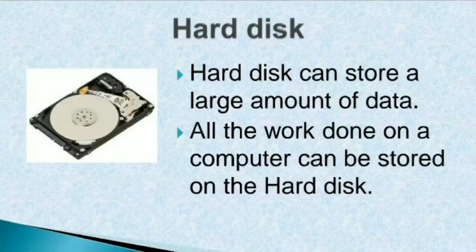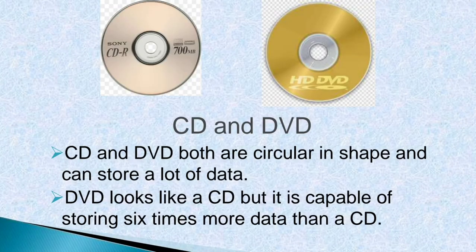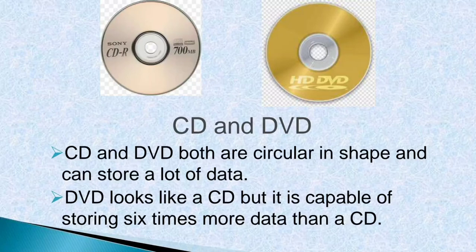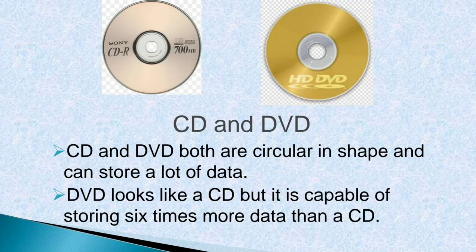Next are CD and DVD. CDs and DVDs are both circular in shape and can store a lot of data. They can be easily carried around to move data from one computer to another. Both are used to read and write information. A DVD looks like a CD but is capable of storing 6 times more data than a CD, meaning a DVD's storage capacity is more than a CD's.